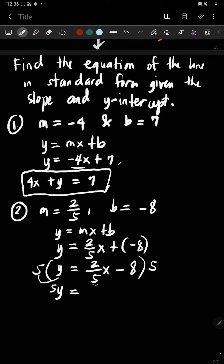2/5 times 5, so you cancel out 5. So the remaining is 2 times x, which is 2x. Negative 8 times 5 is negative 40.